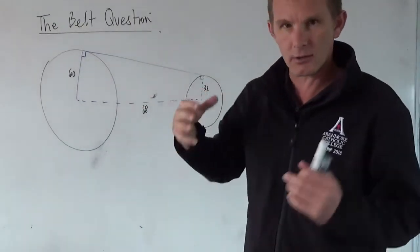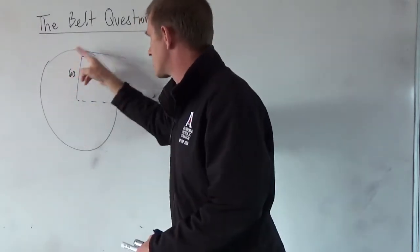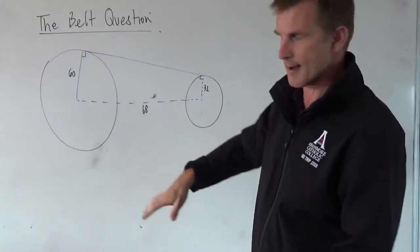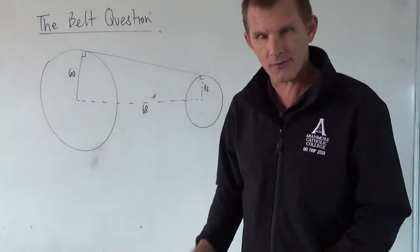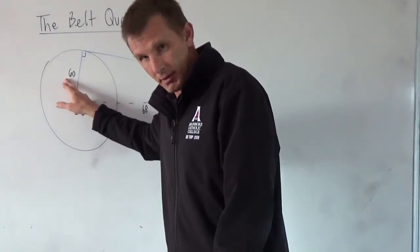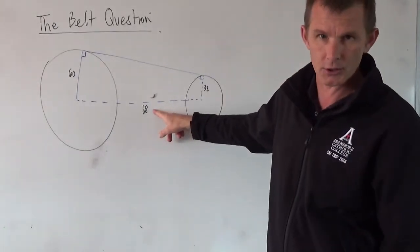This question was actually phrased in the idea that it's a racetrack. You've got a circular part of the racetrack, a straight, a circular part, and a straight. It doesn't matter how the question is phrased, the three things that you need is the radius of the bigger circle, the radius of the smaller circle, and the distance between the two.